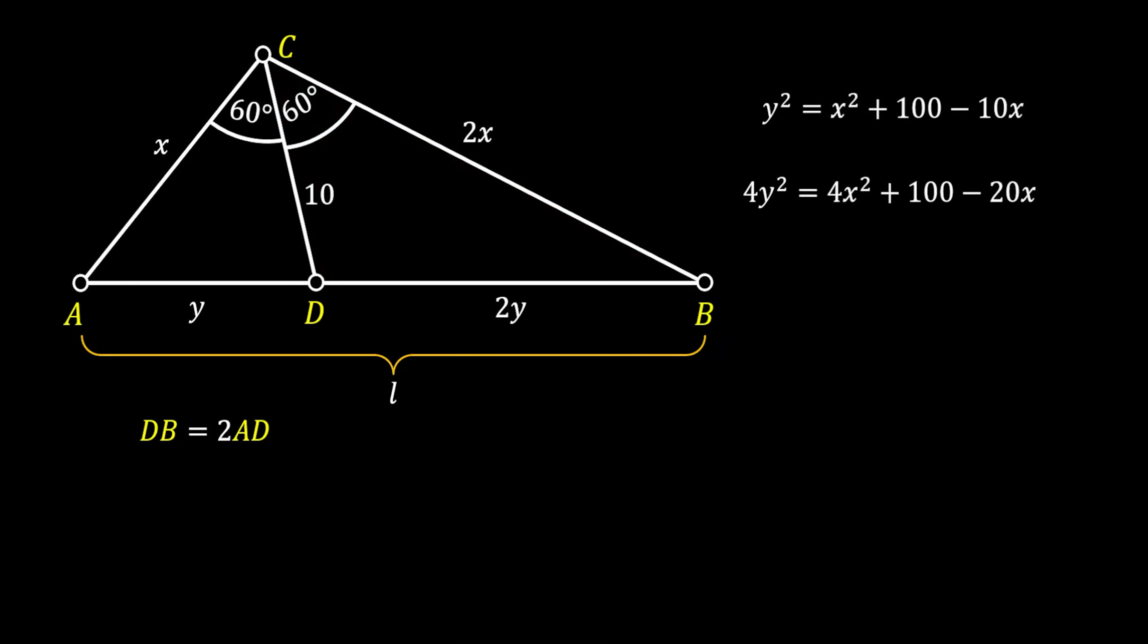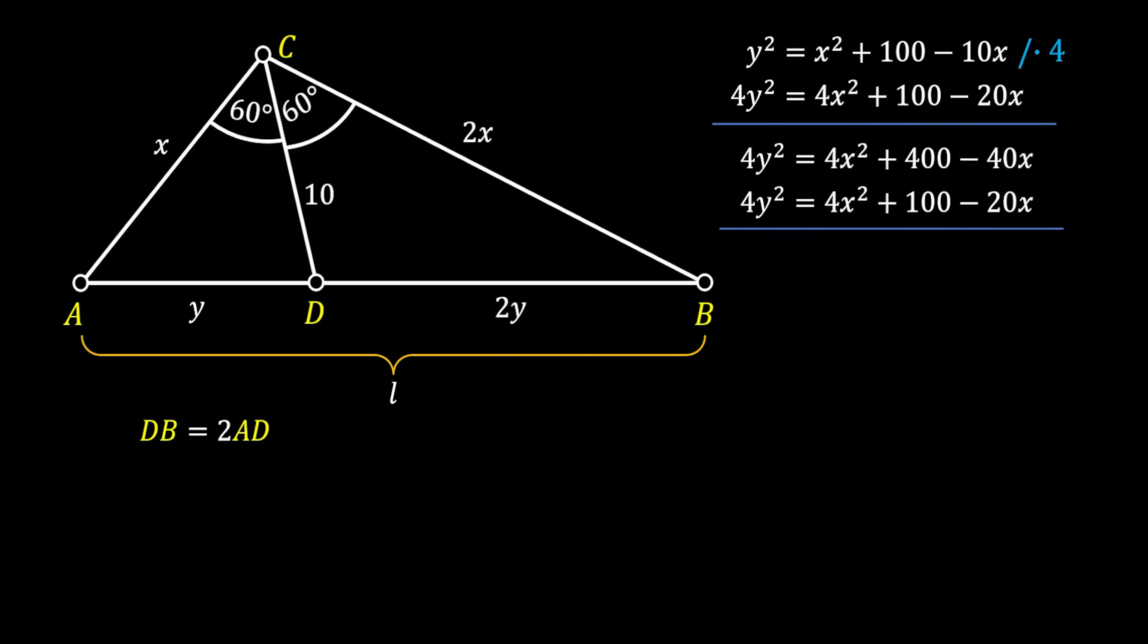Alright, so now we are going to use those two equations as a system of equations in order to find the value of X and Y. I will expand the top equation with 4, then rewrite the second equation and subtract those two equations. If we do this, you can see that 4Y squared will cancel and also 4X squared. And we are going to get that 0 is equal to 300 minus 20X, which means that 20X is equal to 300. So X has the value of 15.